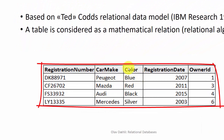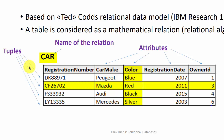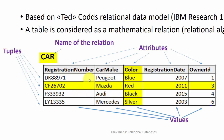Here we see an example of a relation. The relation will have a name, and it will have attributes like color and car make. It will also have tuples, which are practically the same as rows. And data will be stored inside the relation as values.